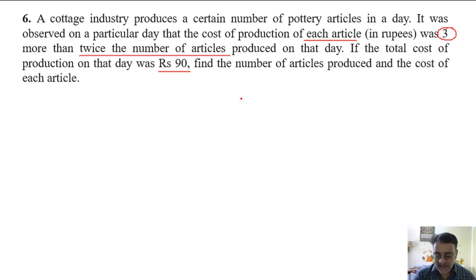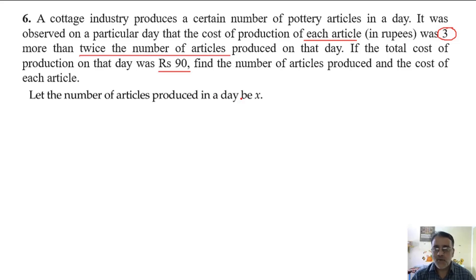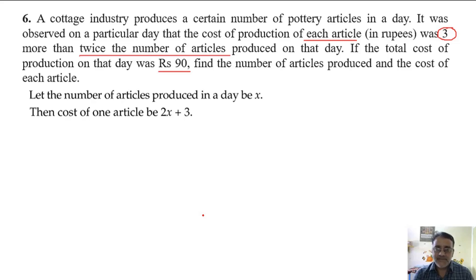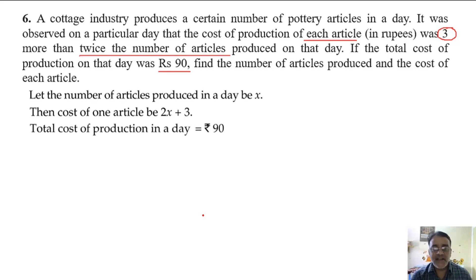Let the number of articles be x. The cost of production of each article is 3 more than twice x, which is 2x plus 3. The total production cost is x into (2x plus 3), and that equals 90. So therefore x into (2x plus 3) is equal to 90.